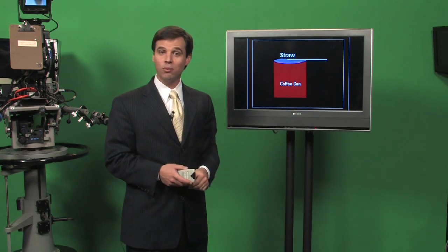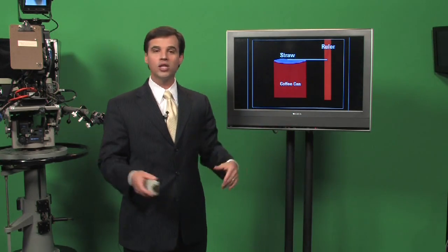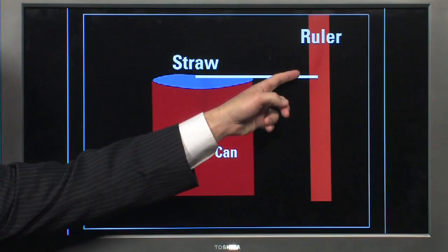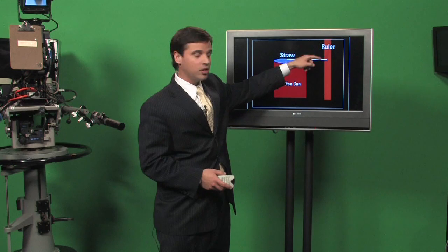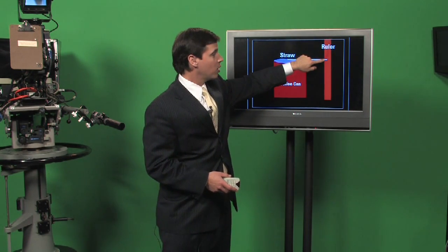And the way you can measure that pressure change is with a ruler. And over a period of several days, mark on the ruler where the straw is. On the days where the pressure goes up, the measurement on the ruler will be higher.